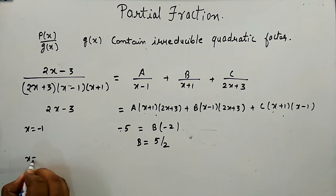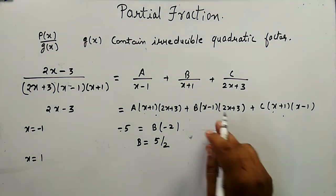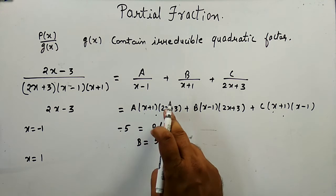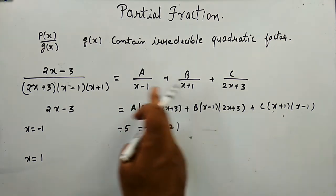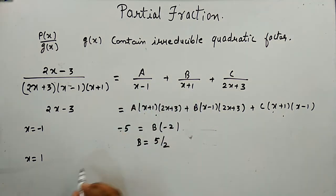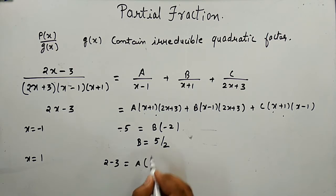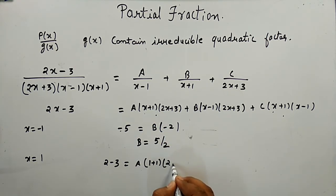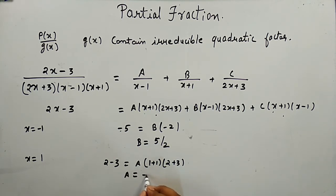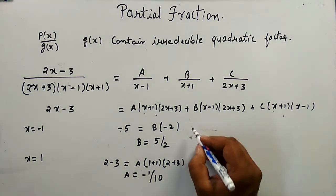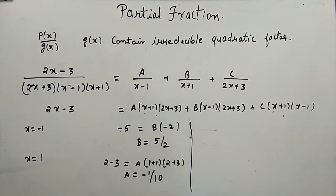Substituting x = 1, the second and third terms become zero. The equation becomes 2 - 3 = A(1 + 1)(2 + 3), giving -1 = A(2)(5) = 10A. So A = -1/10.